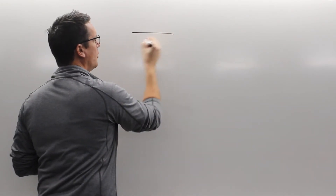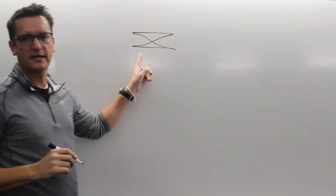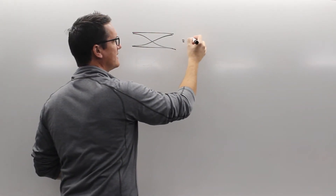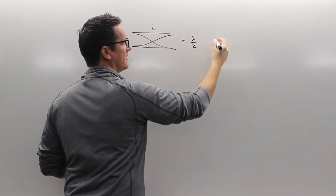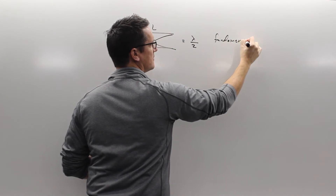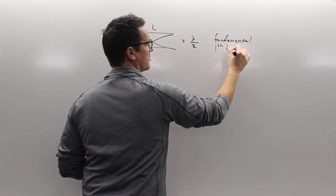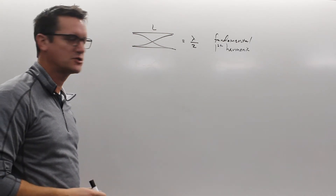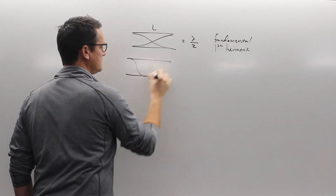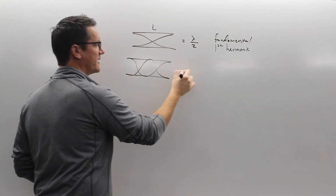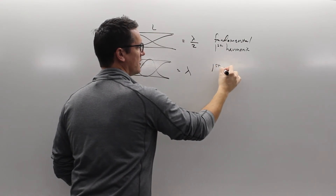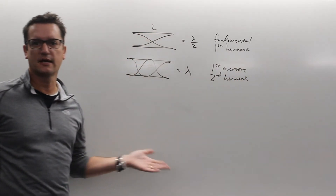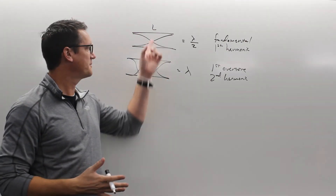For tubes: an open tube — you put in an antinode, you get out an antinode. The length of the tube is half of a wavelength, and this is called the fundamental frequency or the first harmonic — that's the longest, lowest tone you can play in that tube. Going up from there, you get one wavelength, which is the first overtone or the second harmonic, and so on. It actually follows the exact same pattern that a string does — the pictures are just a little different. This is called an open tube.